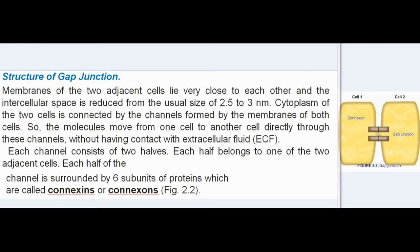Structure of gap junction: The membranes of the two adjacent cells lie very close to each other and the intercellular space is reduced from the usual size of 2.5 to 3 nanometers. The cytoplasm of the two cells is connected by channels formed by the membranes of both cells. The molecules move from one cell to another cell directly through these channels, without having contact with extracellular fluid.